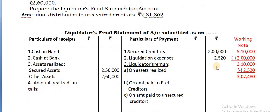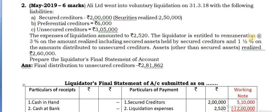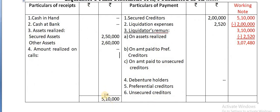After that, take the liquidator's remuneration. It is given as 3% on the amount realized. The total amount available is 5,10,000, so on 5,10,000 at the rate of 3%, that gives you 15,300.